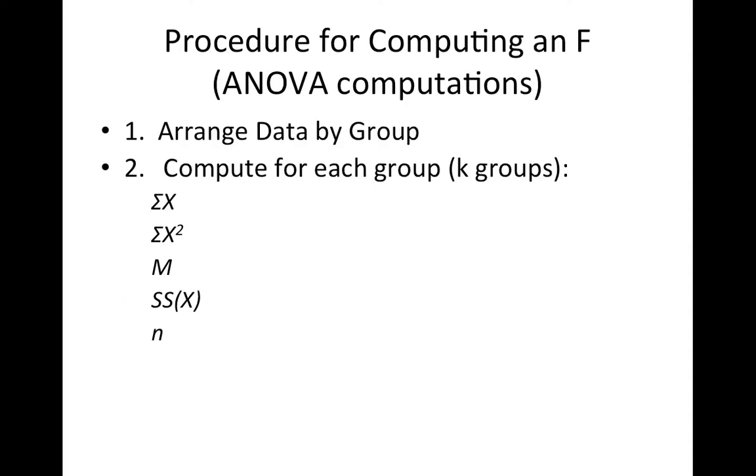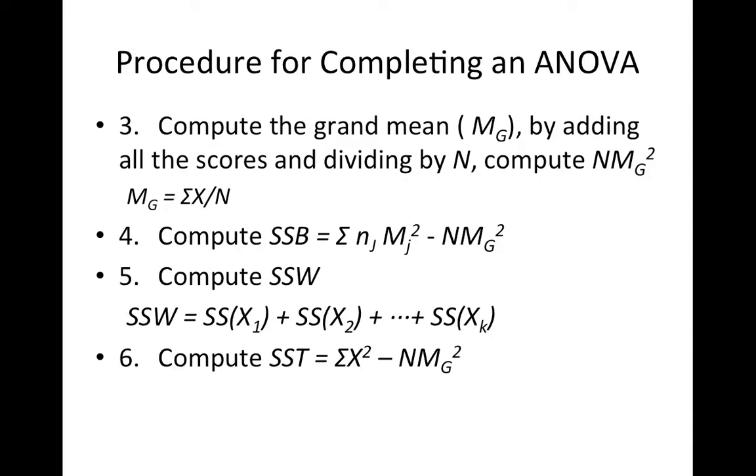So our computations. If we were doing ANOVA by hand, the best way to do this is to arrange data by group. And for each group, we compute the sum of all the scores. We square the scores and sum them. We calculate the mean, the sum of squares, and n. Then we compute the grand mean by adding all the scores divided by n. And we compute this term n times the grand mean squared, where the grand mean is just the sum of all the scores divided by n, sum of all the x's divided by big N.